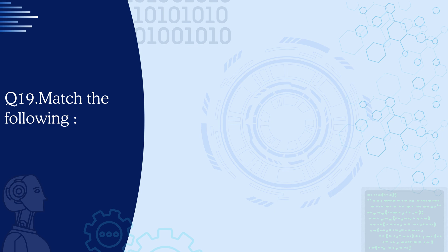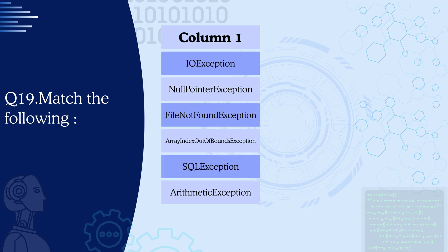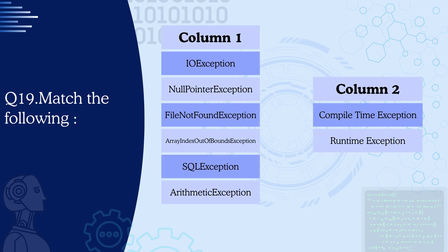Question 19: Match the following exceptions with their type — compile-time or runtime. IOException is a compile-time exception. NullPointerException is a runtime exception. FileNotFoundException is a compile-time exception. ArrayIndexOutOfBoundsException is a runtime exception. SQLException is a compile-time exception. ArithmeticException is a runtime exception.